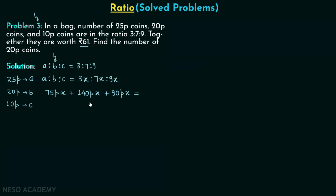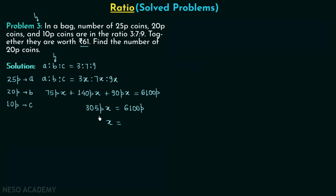We convert rupees to paise since the left-hand side is in paise. We know one rupee equals 100 paise, so 61 rupees equals 6100 paise. Performing the addition on the left-hand side we get 305X paise = 6100 paise. Dividing both sides by 305, we get X = 6100 ÷ 305, giving us X = 20.